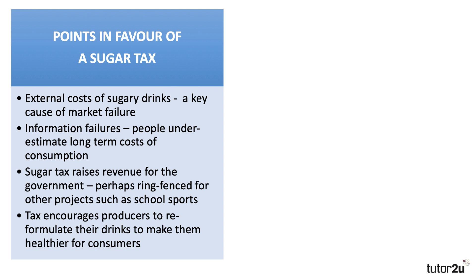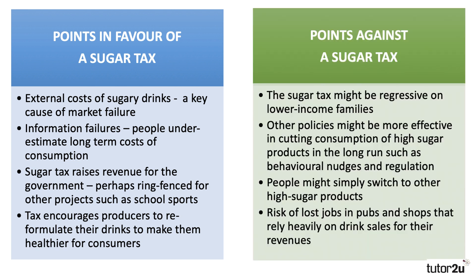The other justification used was that putting a tax on high-sugar drinks would encourage producers — Fanta, Coca-Cola, Pepsi, etc. — to reformulate their drinks to reduce the sugar content and thereby make them healthier for consumers. Arguments against: the sugar tax is essentially regressive on lower-income families, as households with relatively low incomes may spend a higher proportion of their income on these products and therefore get taxed disproportionately more. Another argument is that the tax may be ineffective due to low elasticity of demand, and there might be other policies better at changing behaviour — smart behavioural nudges, for example, or tougher regulation at point of sale. Also, people might simply switch to other high-sugar products like high-sugar snacks to get their sugar content. And there's a macroeconomic effect: if you tax the producers and retailers, there could be a loss of jobs in pubs and shops that rely heavily on drink sales for their revenues.